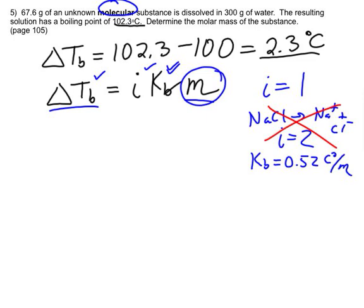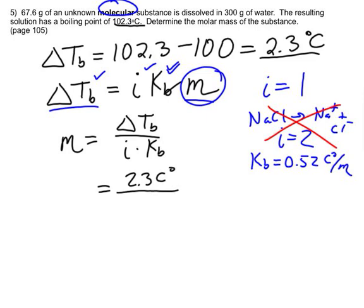So that means that molality equals the change in the boiling point over i times Kb, or 2.3 Celsius degrees over 1 times 0.52. So if we do that, 2.3 divided by 0.52, we come to the conclusion that this must be a 4.42 molal solution of this molecular substance.